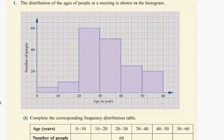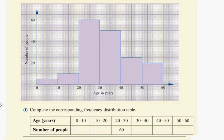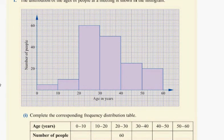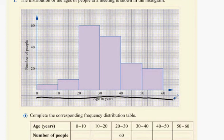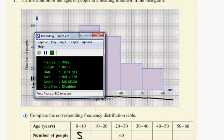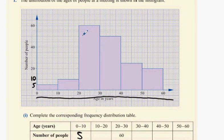Question one: you're given a histogram. The y-axis represents the number of people, and the x-axis represents something like age. As an example, how many people are in between zero to ten years old? According to the chart, that's ten, which would be five people.